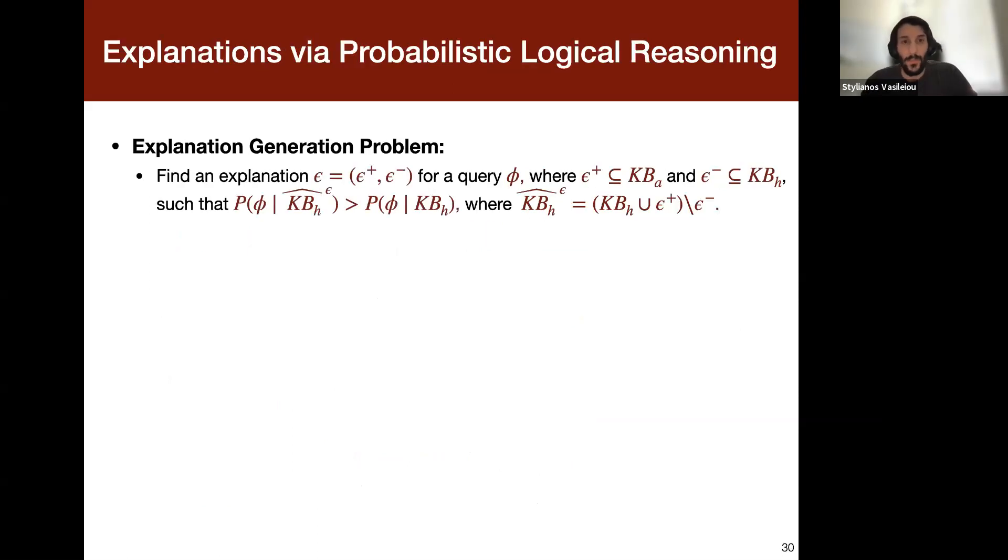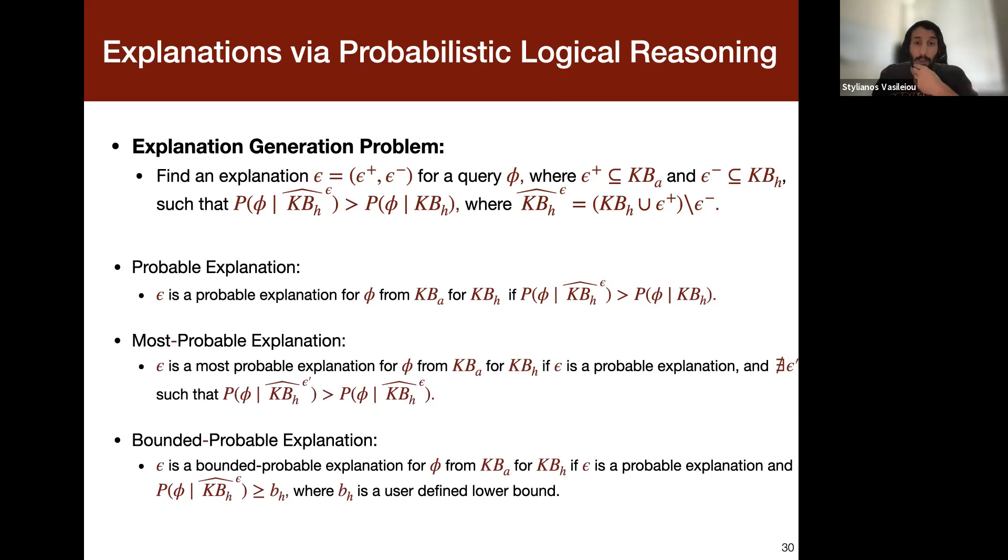So now, given that, we can reformulate the explanation generation of our problem as to find an explanation for a query such that now that explanation increases the probability of the query in the updated human's knowledge base. So now given this definition of the problem, this definition is what we can call the probable explanation. So we can say that epsilon is a probable explanation if it increases the probability of the query in the updated human's knowledge base. And now the things we can explore here are to find the most probable explanations or the bounded probable explanations, and basically the bounded probable explanations may be necessary because computing probabilities in that setting is a very hard problem.